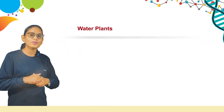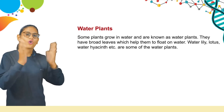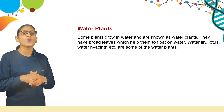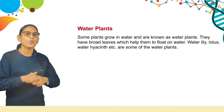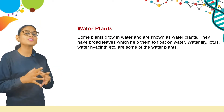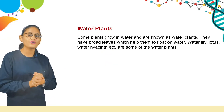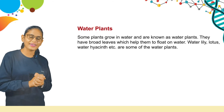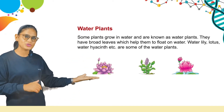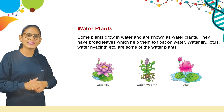Now, water plants. Some plants grow in water and are known as water plants. They have broad leaves which help them to float on water. Water lily, lotus, water hyacinth, etc. are some of the water plants. Here are some pictures: water lily, water hyacinth, and lotus.